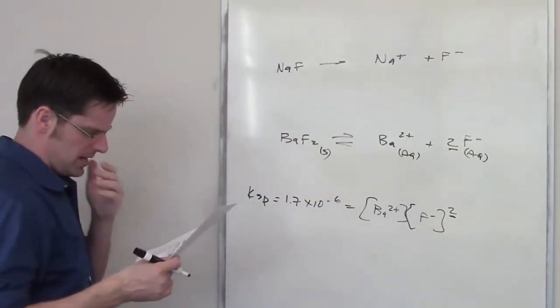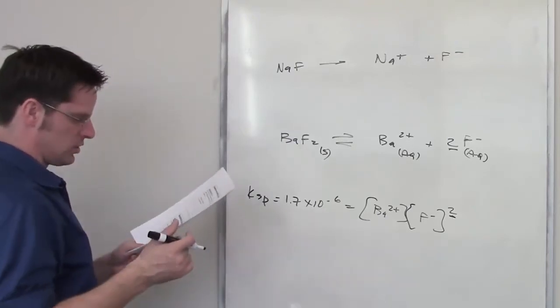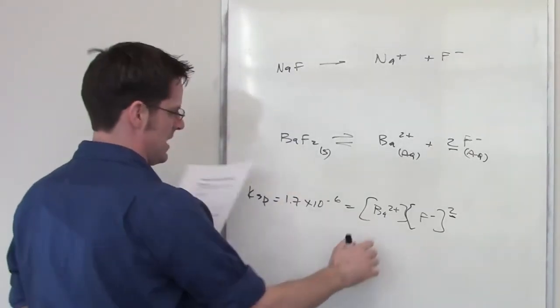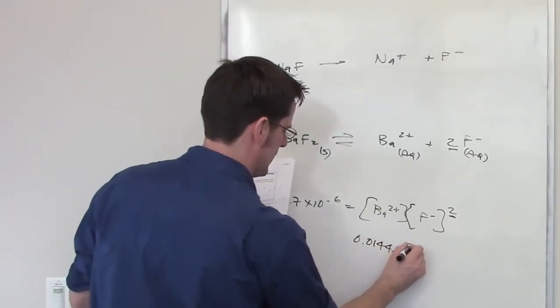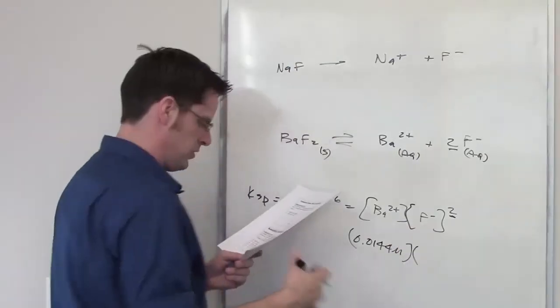It also tells me what the equilibrium concentration of barium 2 plus is. It gives me that number as being 0.0144 molar. So I have this number here already.